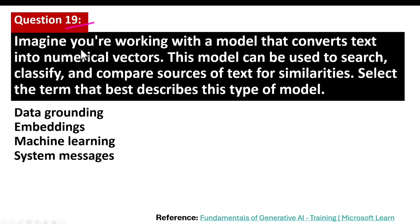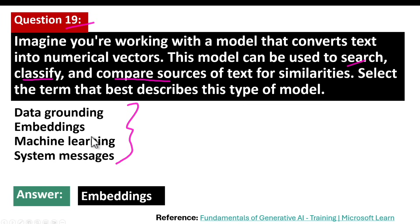Question number 19. Imagine you are working with a model that converts text into numerical vectors. This model can be used to search, classify, and compare sources of text for similarities. Select the term that best describes this type of model. The correct answer is embeddings. Embeddings are a form of technology used in AI to convert text into numerical vectors — a way for computers to understand and analyze words and sentences by translating them into a format they can work with. Embeddings help in searching, classifying, and comparing text sources for similarity.